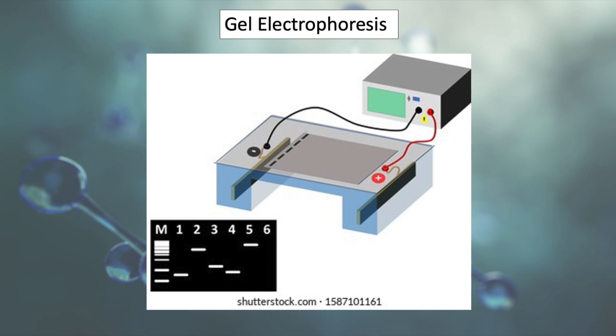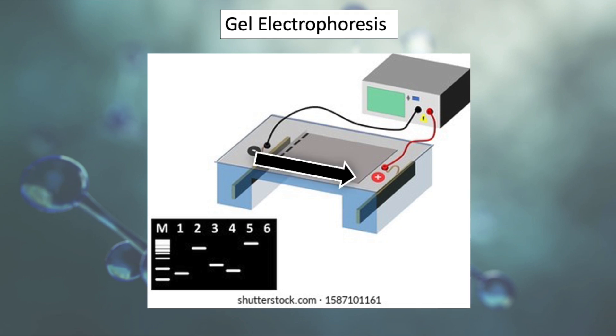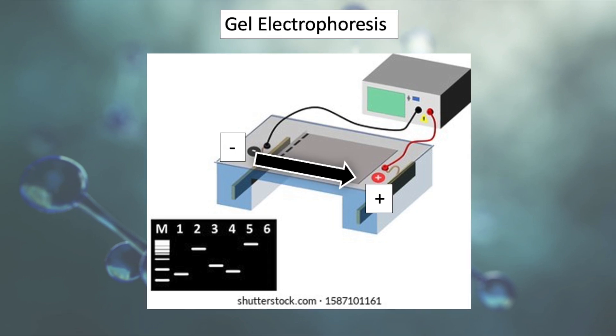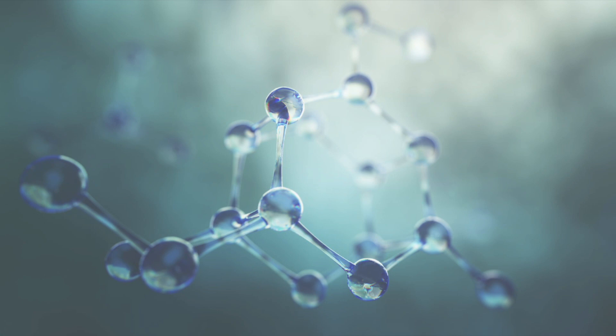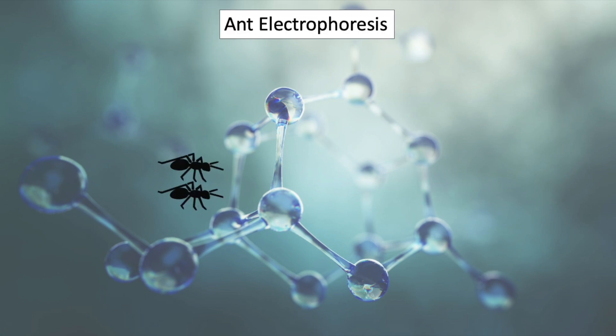To briefly review how electrophoresis works, the rig is attached to a machine which will send charged particles from the negative side to the positive side. If you think of the electromagnetic waves as little tiny worker ants traveling across a plate,